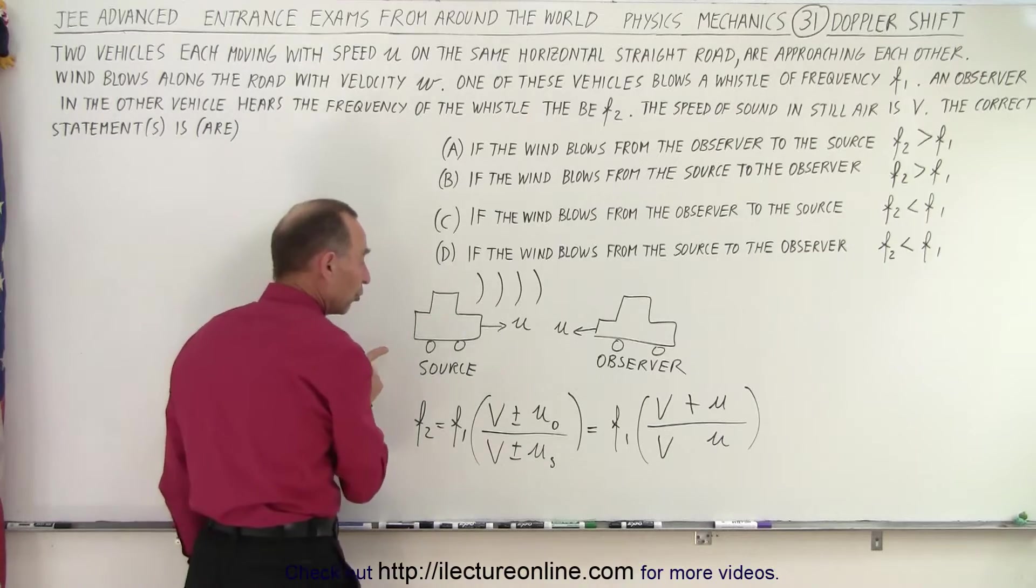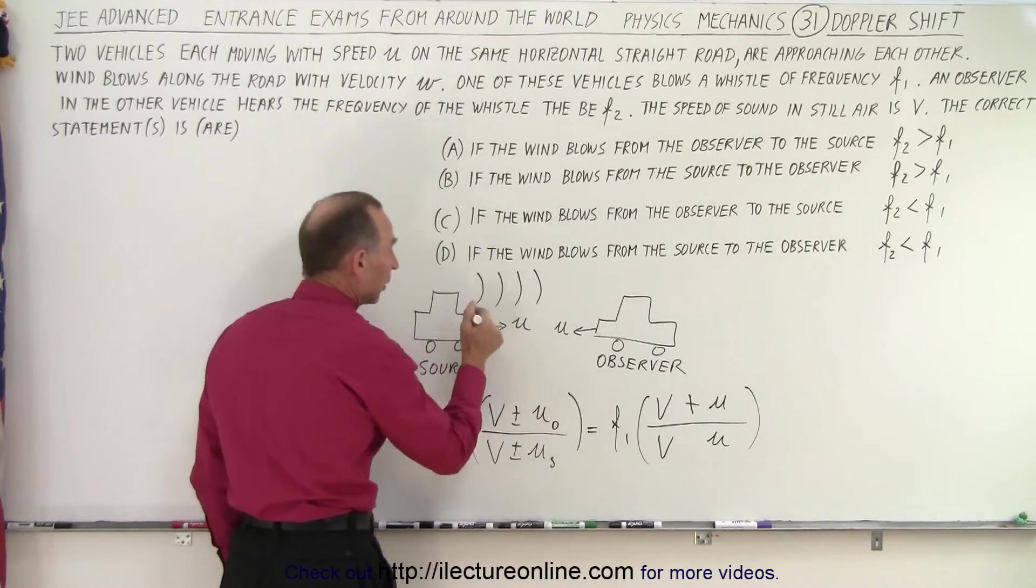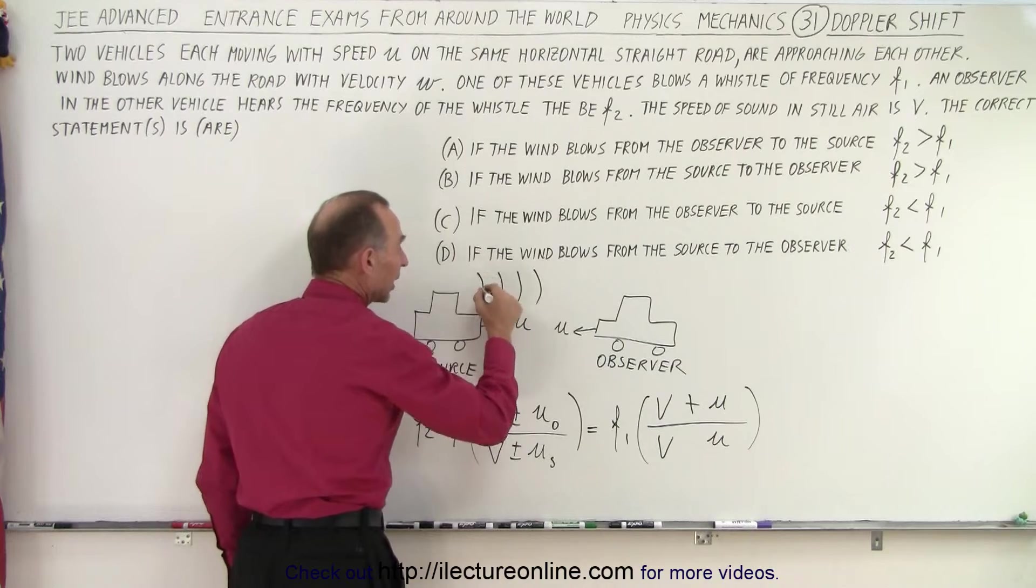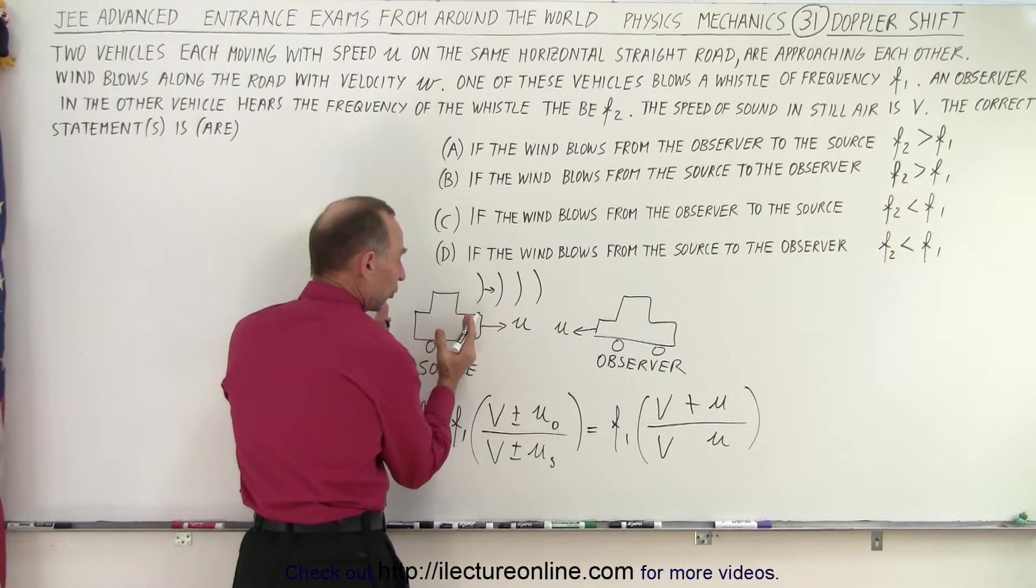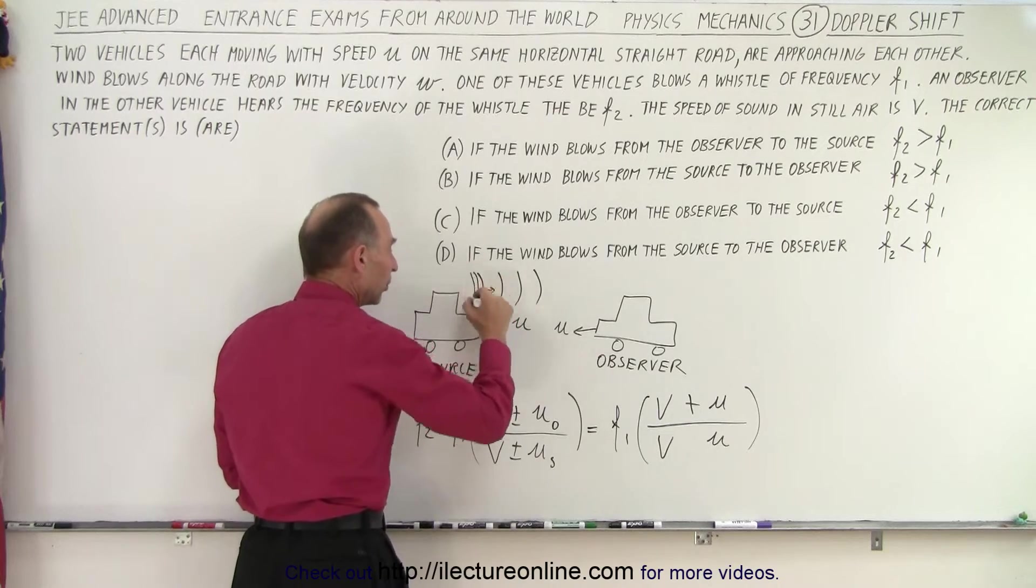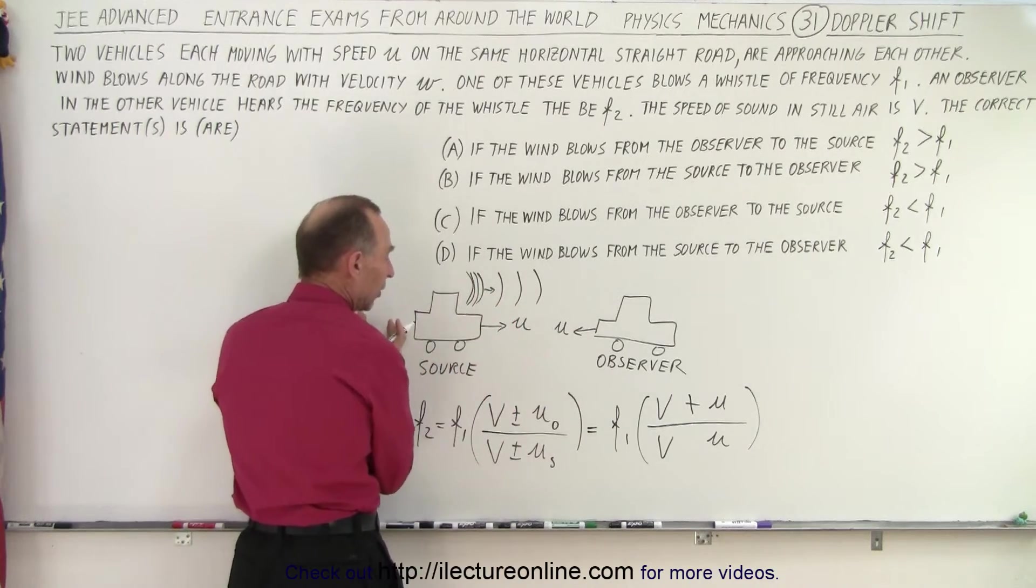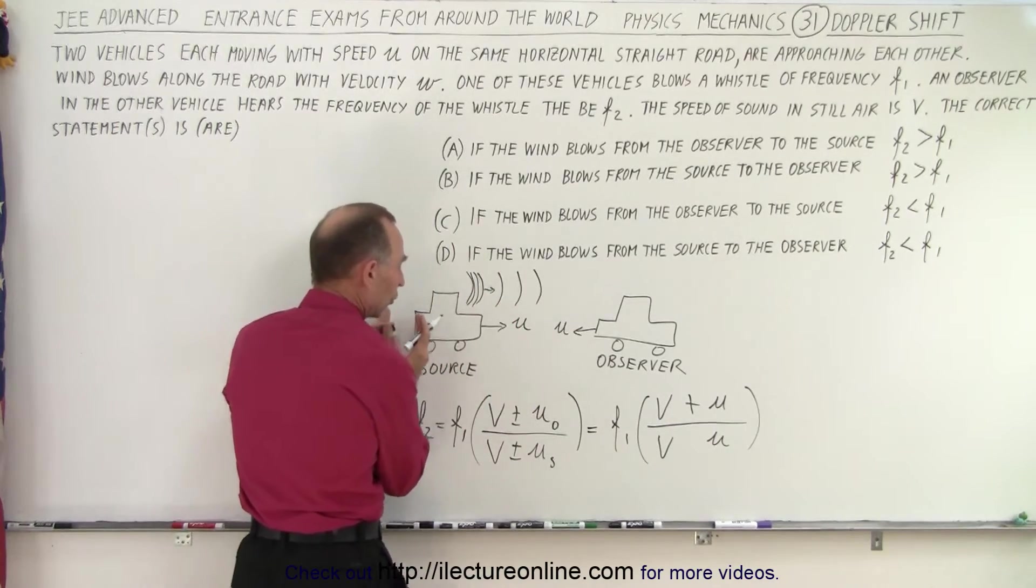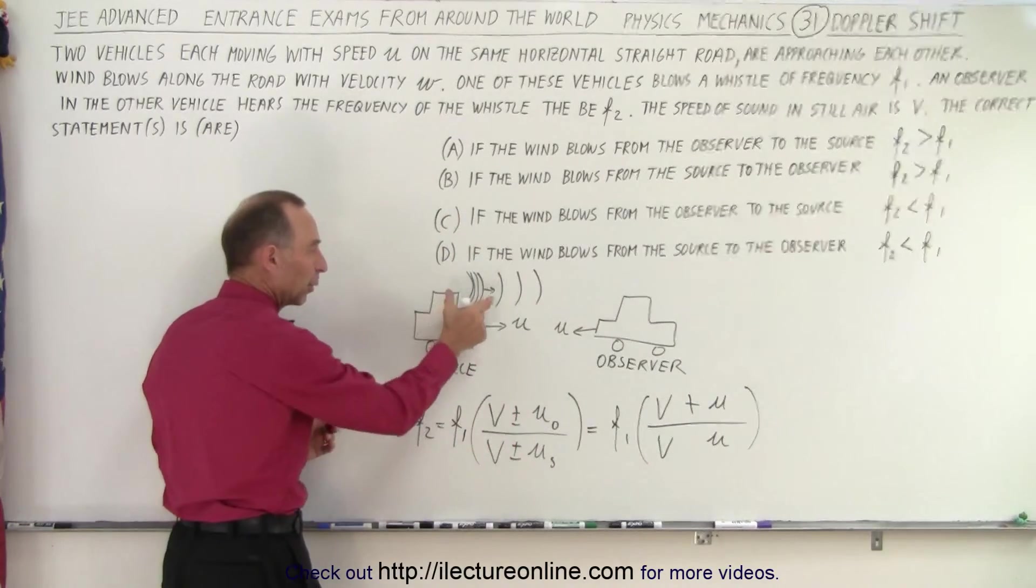Now when the source is moving towards the observer, it puts out a wave, then the wave moves away, then it puts out another wave. But if the source moves towards the observer, then the waves will be closer together, because when the next wave is put out, the source is closer to the observer than when it put out the previous wave.